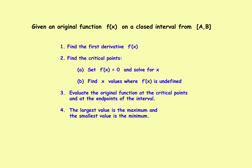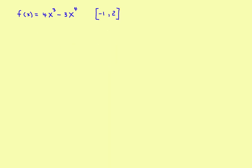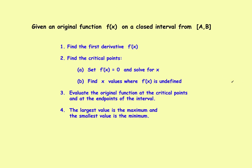Let's try an example — it's actually not very hard. Here's our first example: f of x equals 4x cubed minus 3x to the fourth, on the interval from negative 1 to 2. So a equals negative 1 and b equals 2. We'll follow the steps — the first step says find the first derivative.